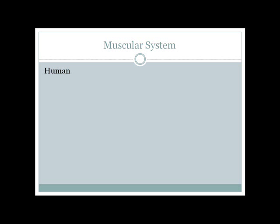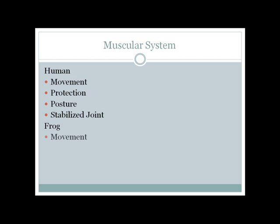Muscular system comparison. For humans: muscles are for movement, protection, posture, and stabilizing joints. For frogs: muscles are for movement, maintaining posture, protection of internal organs, and stabilizing joints.